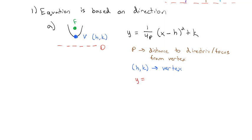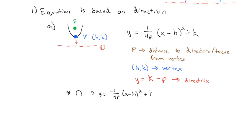The directrix equation is y equals k minus p, since we drop from the vertex down by distance p. As a side note, if the parabola is upside down, the only difference is we make the whole thing negative: y equals negative (1 over 4p) times (x minus h) squared plus k. The negative in front makes the parabola open downward.